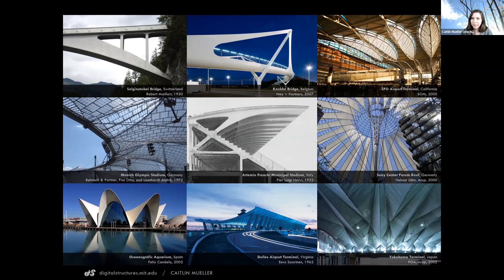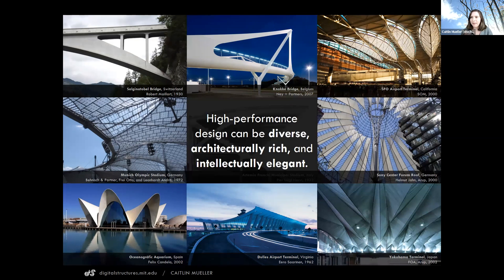We're really interested in high performance design. These are all examples of high performance architecture from the past, and in particular these are all materially efficient. What's interesting to me about these examples is not only that they are very high performing, but they're also very diverse. They express a lot of varied and exciting design intent, showing that architects, designers, and engineers can collaborate to expand the palette of architecture while harnessing the power of high performance geometry.